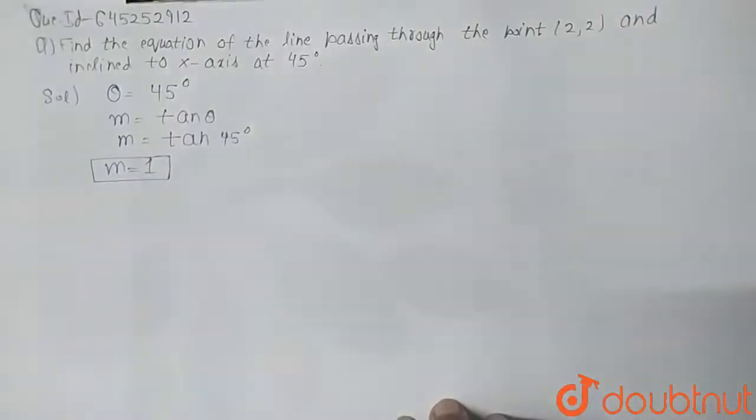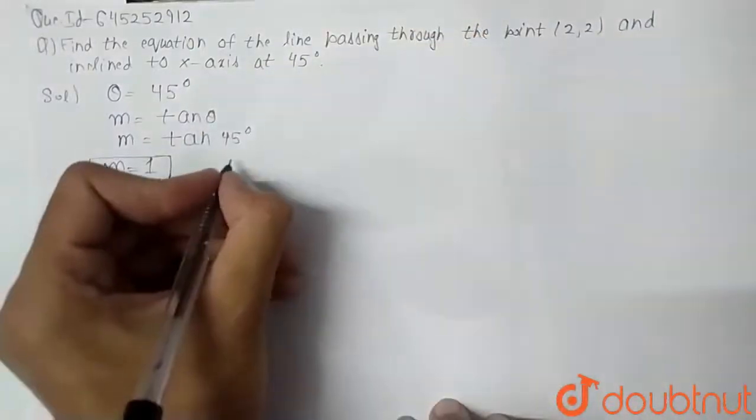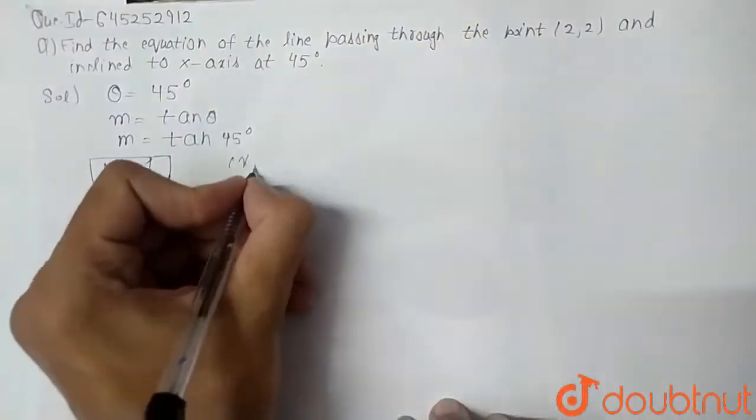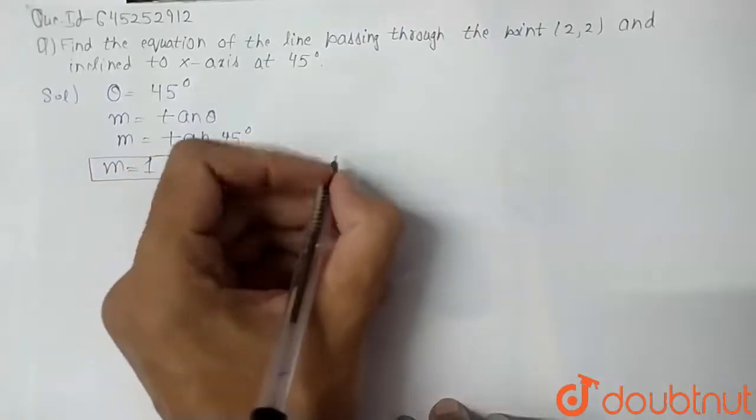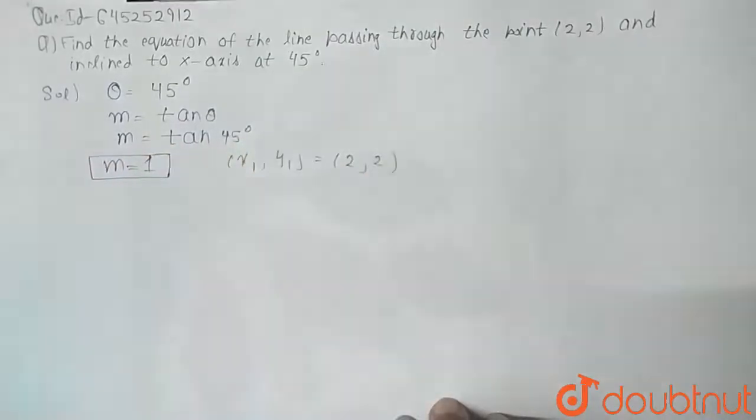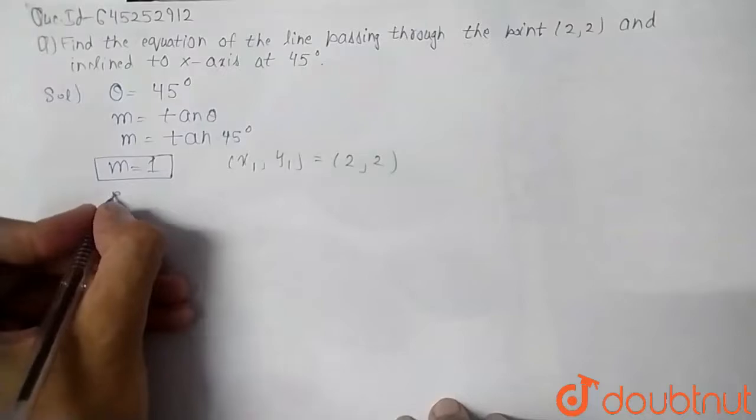Now we have equation of line and coordinates are given. x1, y1 coordinates are given as (2, 2). So we all know that equation of line...